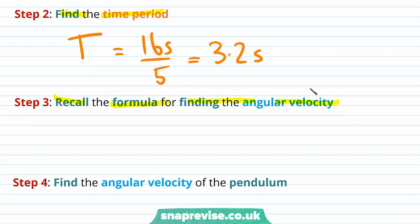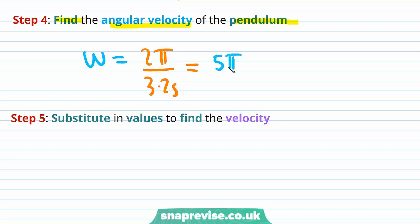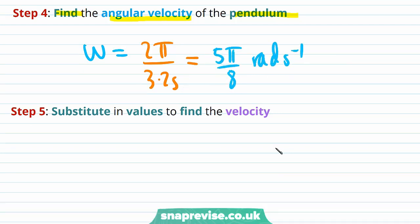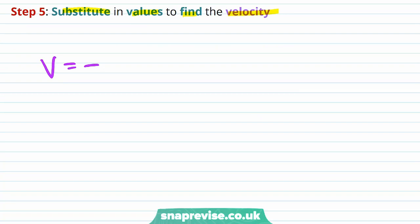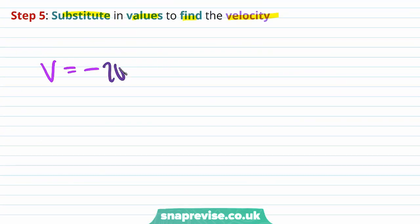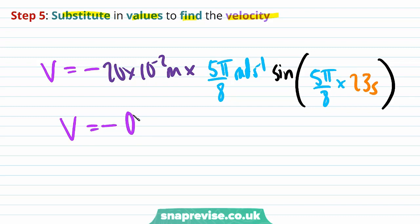We need to recall the formula for angular velocity: omega equals 2 pi divided by time period T. So omega is equal to 2 pi divided by 3.2 seconds, which equals 5 pi divided by 8 radians per second. Substituting in values: v equals minus the amplitude of 20 centimeters (or 20 times 10 to the minus 2 meters), times 5 pi divided by 8 radians per second, times sine of that angular frequency times 23 seconds. The velocity is equal to minus 0.36 meters per second to two significant figures.